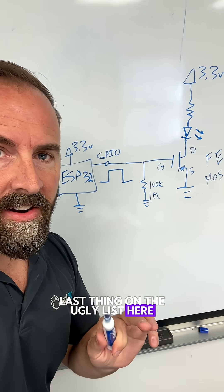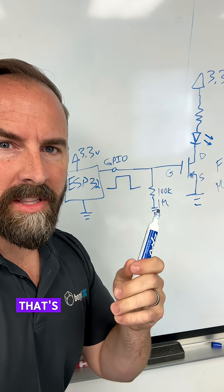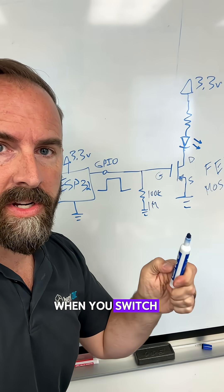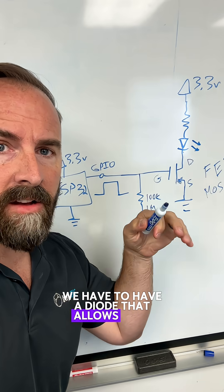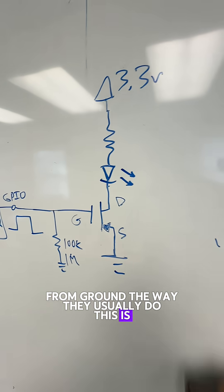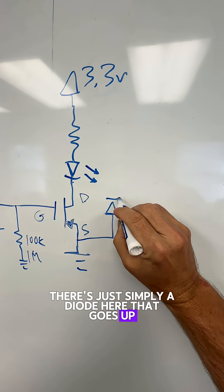Last thing on the ugly list here. This FET, if you're driving an inductive load like a motor or something that's going to have inductance and shoot a very high voltage back at you when you switch it, we have to have a diode that allows that negative voltage to shoot up from ground.